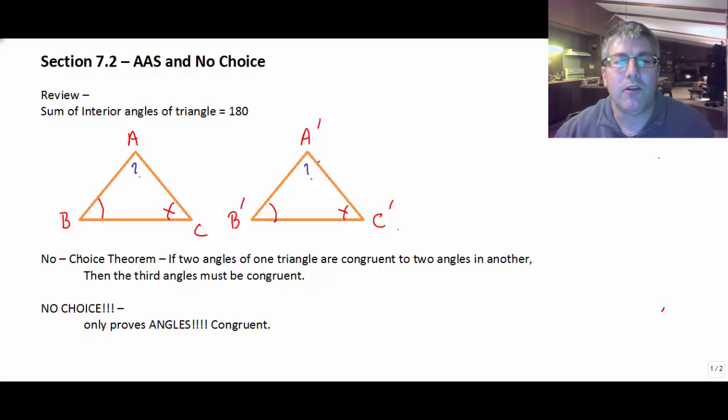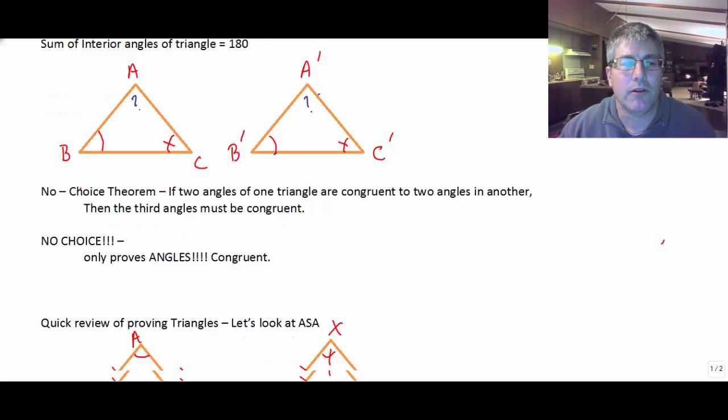So the no-choice theorem tells us if two angles of one triangle are congruent to two angles in another triangle, then the third angles must be congruent by no-choice. Now keep in mind that no-choice will only prove angles congruent. It does not prove triangles congruent. No-choice only proves angles congruent.